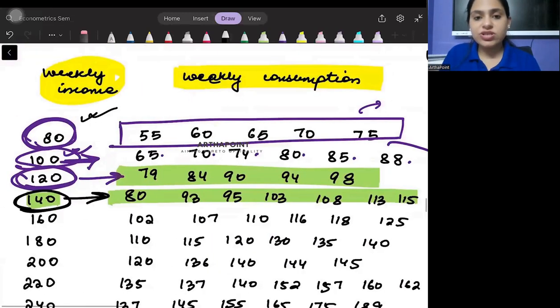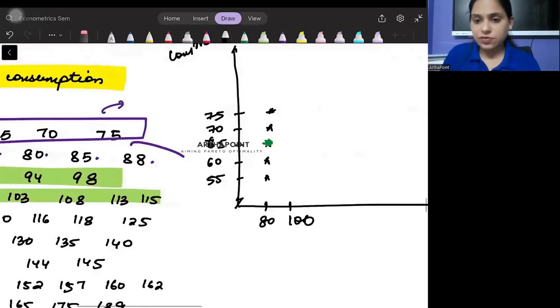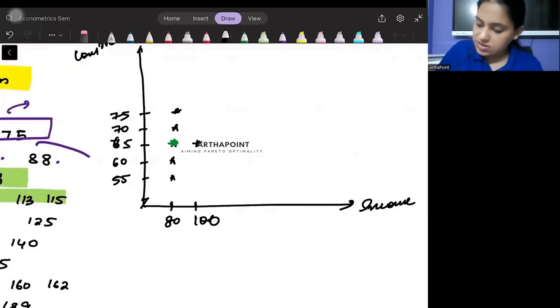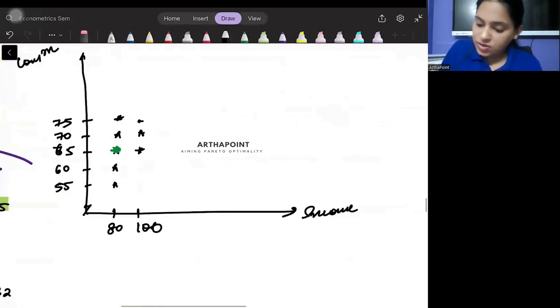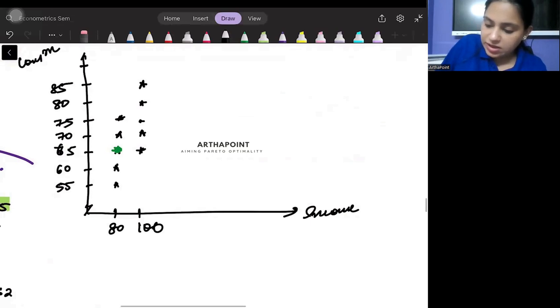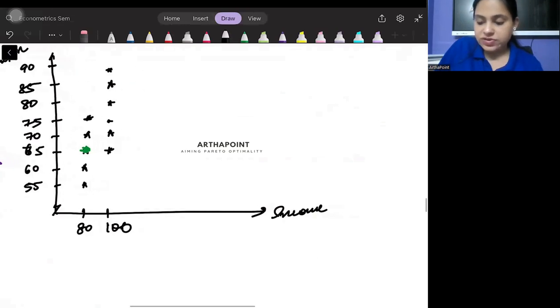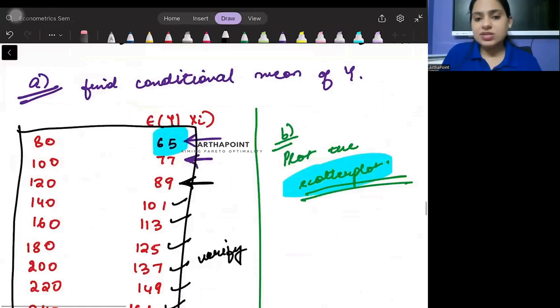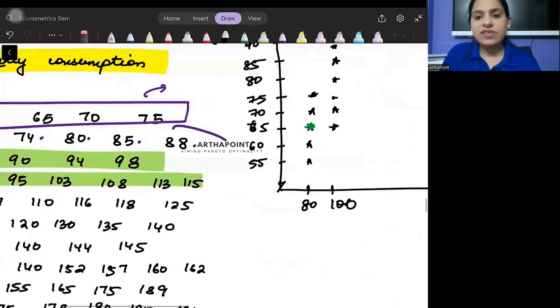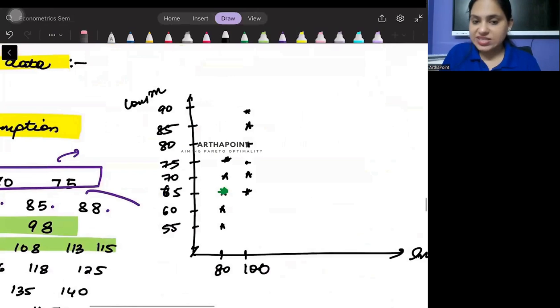Then I need to jot down these points: 65, 70, 74 will be a bit lower than 75, then 80, 85, 88. Here I will be having 80, 85, and here I will have 90. The average of 85 and 90 will be approximately 88. Its average is coming down to 77, so I will jot down the point 77, which is going to be somewhere here.